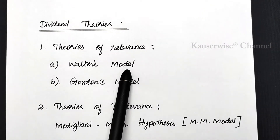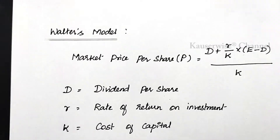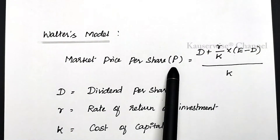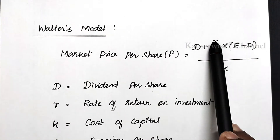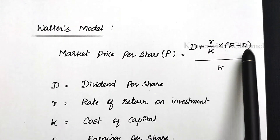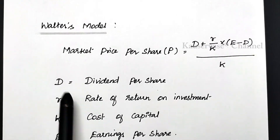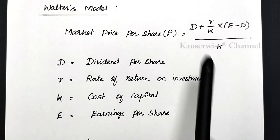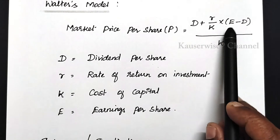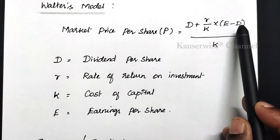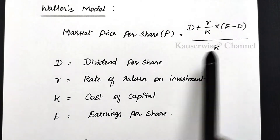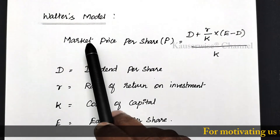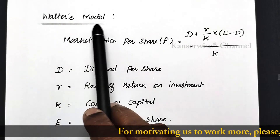First let us see Walter's model, which comes under theories of relevance. Under Walter's model, we have one formula to find out the market price per share. The formula is: D plus (R divided by K) into (E minus D), all divided by K. Here D refers to dividend per share, R refers to rate of return on investment, K refers to cost of capital, and E refers to earnings per share. These are the components required to find out market price per share according to Walter's model.